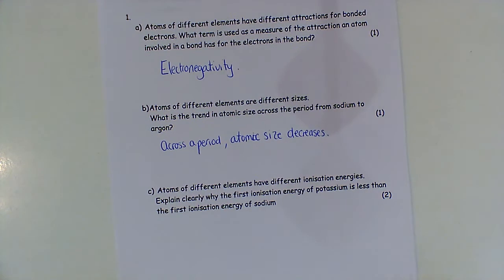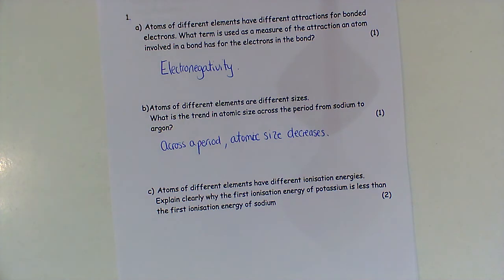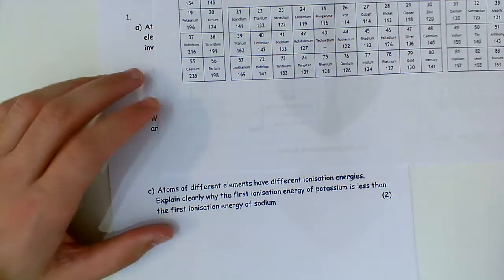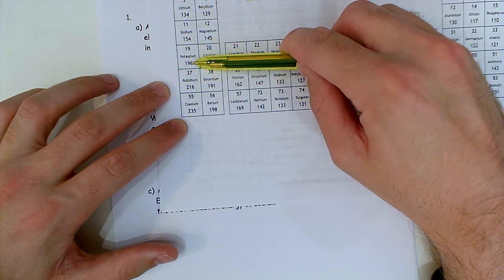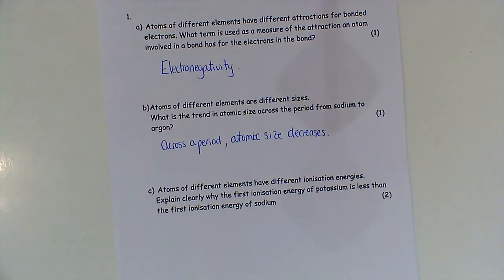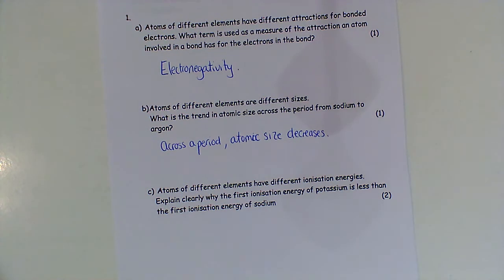For C: atoms of different elements have different ionization energies. Explain why the first ionization energy of potassium is less than the first ionization energy of sodium. You probably want to look up where potassium and sodium are on the table in the data booklet. Sodium is here, potassium is here — potassium is lower down in the group, so I would start with that information.